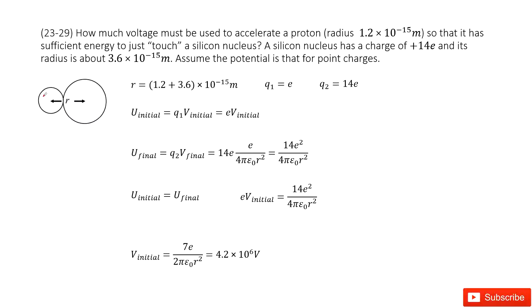Chapter 23 is about electric potential. We need to find the initial voltage to accelerate the proton so that there will be enough energy to just touch the silicon nucleus.